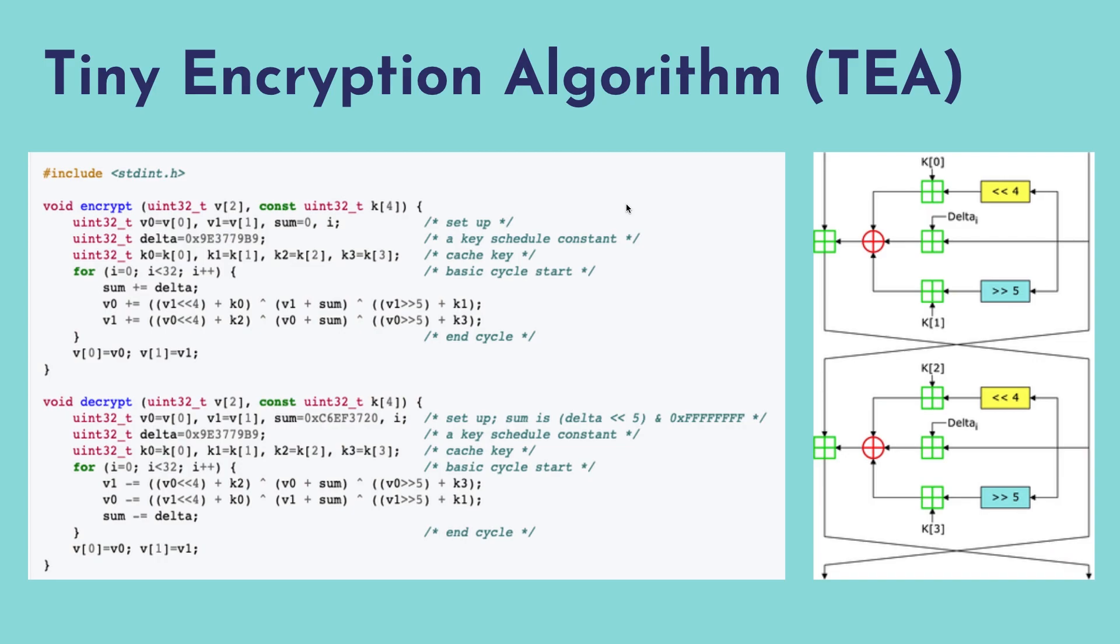See the implementation of the TEA algorithm given in the left side. The encryption and decryption code will be given here. Here v0 and v1 are the data to be encrypted or decrypted, the sum and delta are the constants.